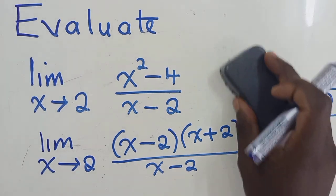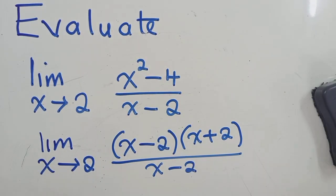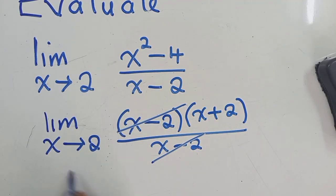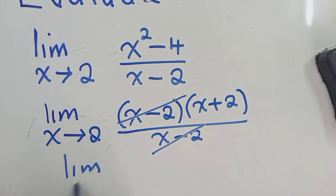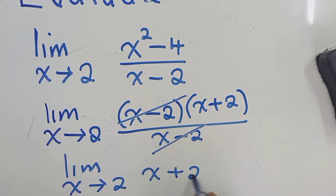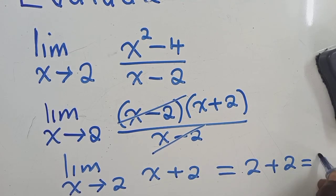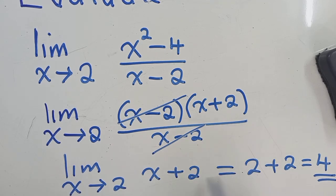So this is what I did right here. So after reaching this point, you can cancel what is common. This and this will go, so we shall remain with the limit as x approaches 2 of x plus a 2, of which this will just give us a 2 plus 2, which is equals to a 4. So if we substitute 2 where x is here, we substitute 2, we shall have 2 plus this 2, which is equals to 4.